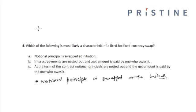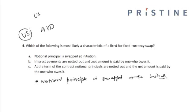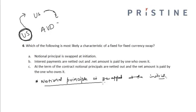Suppose an Australian wants to raise capital in US dollars and an American wants to raise capital in Australian dollars. The American will give the US dollars to the Australian, and the Australian will purchase the Australian dollars and give them to the American. So the notional principal is swapped at initiation.